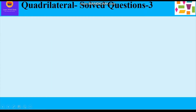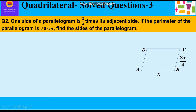Now let's take up question 2. It is the same as question 1, only the difference is that in question 1 we were given the ratio of adjacent sides, while in question 2 we are given the fractional part of the adjacent side. One side of a parallelogram is 3/4 times its adjacent side. If the perimeter of the parallelogram is 70 cm, find the sides of the parallelogram.